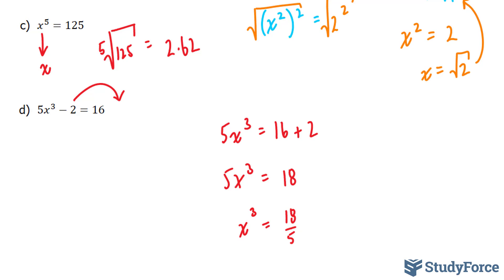Now, I'll take the third root of both sides, so the cube root, essentially. If I do it here, and if I do it here, this 3 and this 3 will go away, giving you simply x.